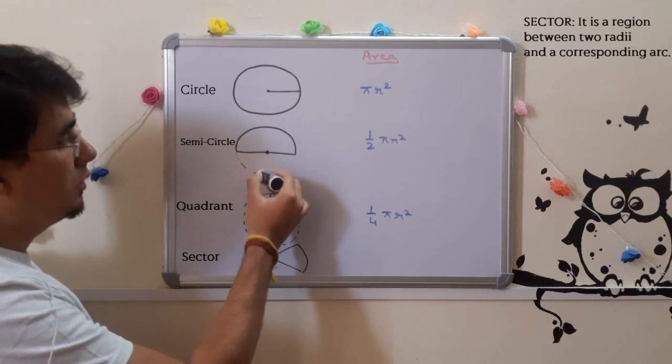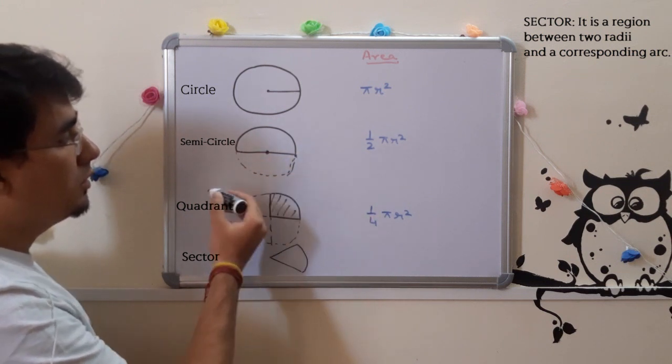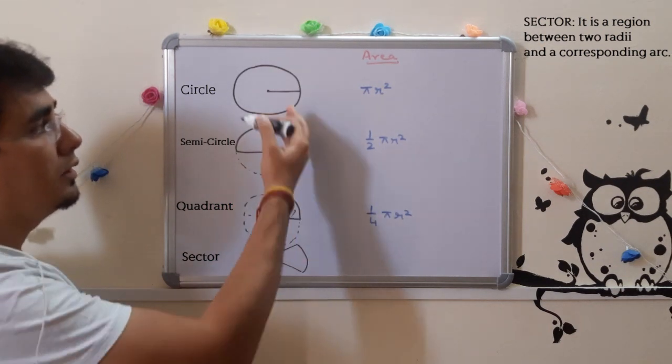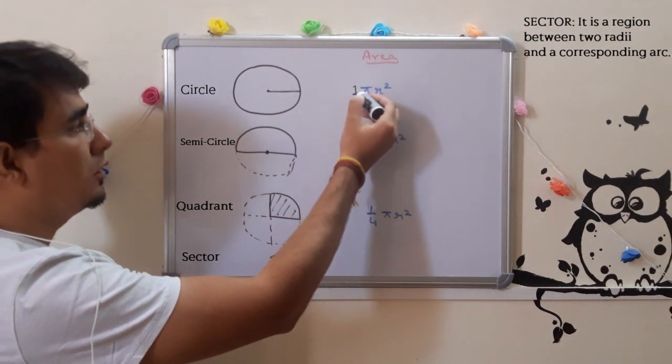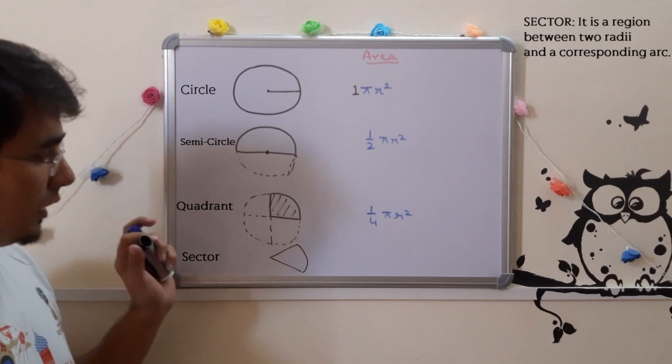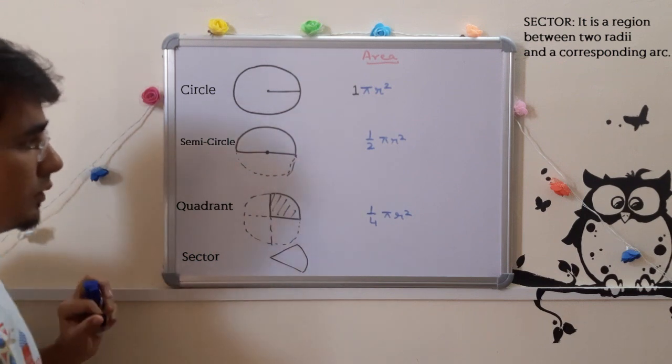And this is nothing but half of a circle. That is ½ π r². This is a full circle. So we can write it as 1 π r². So one thing is very common: π r².